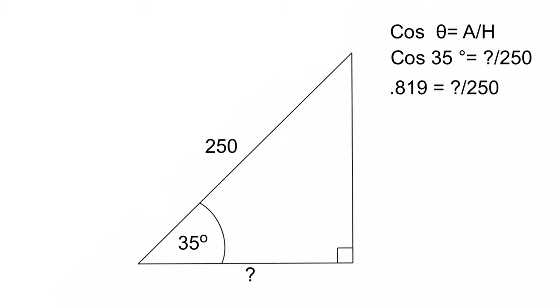0.819 is equal to the unknown over 250. Now we can start the transposition. We flip it around, so we're going to divide this guy out of here and move this guy over to here. So we end up with the unknown is equal to 0.819 times 250, because all we have to do is cross-multiply. And we're going to get an answer of 205.